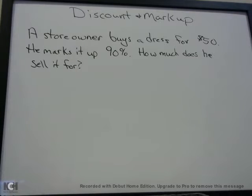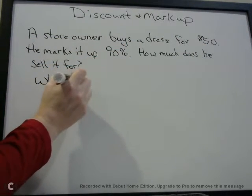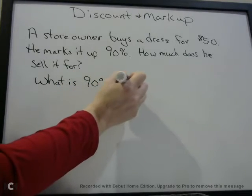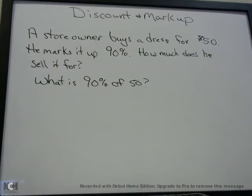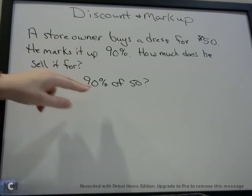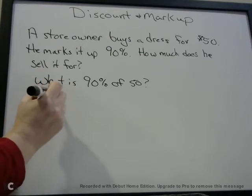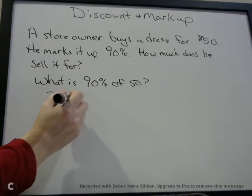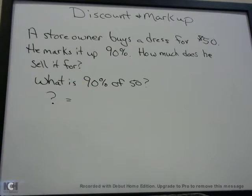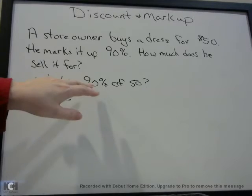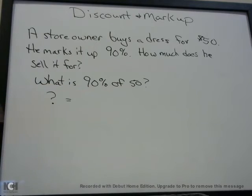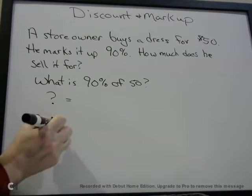What you should be thinking about is: what is 90% of $50? In the algebra videos you'll see how to change words into mathematical symbols, but here's a preview. 'What' means the unknown we're trying to find. 'Is' means equals. 90% — we can't multiply percentages, so we don't want to stick a 90 in there. We have to change that to a real number. Watch the video on percentages if you don't know how to do that.